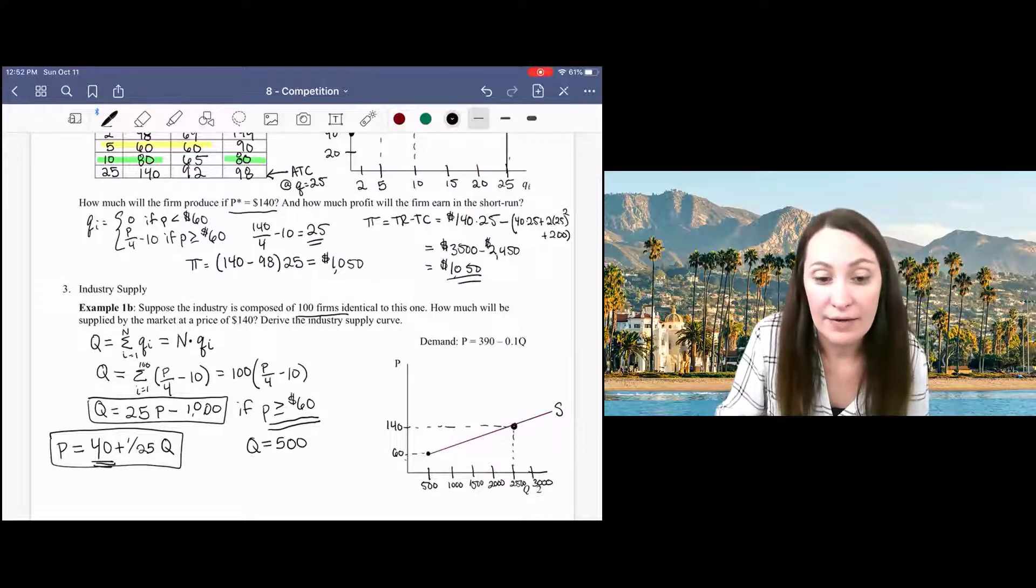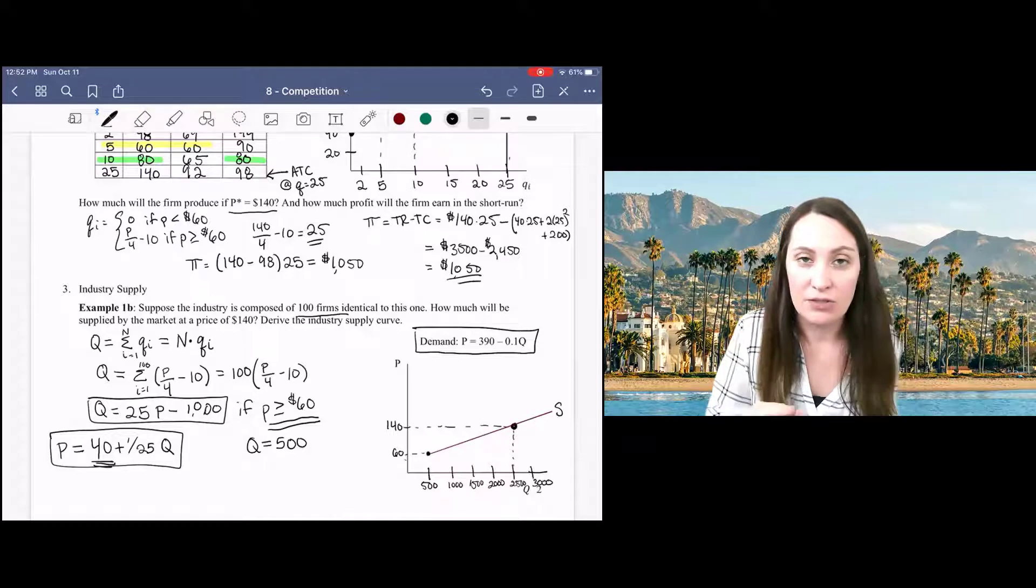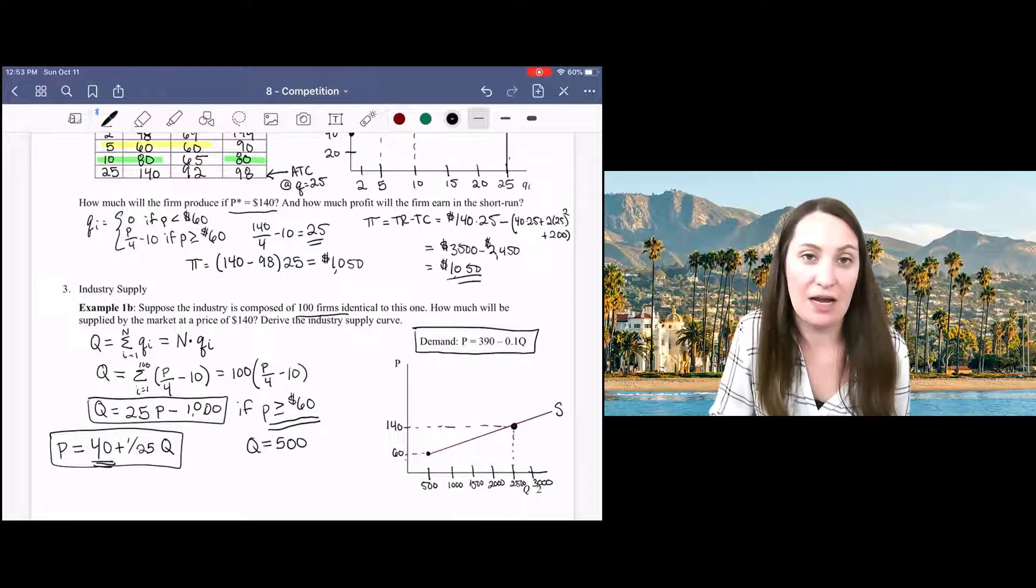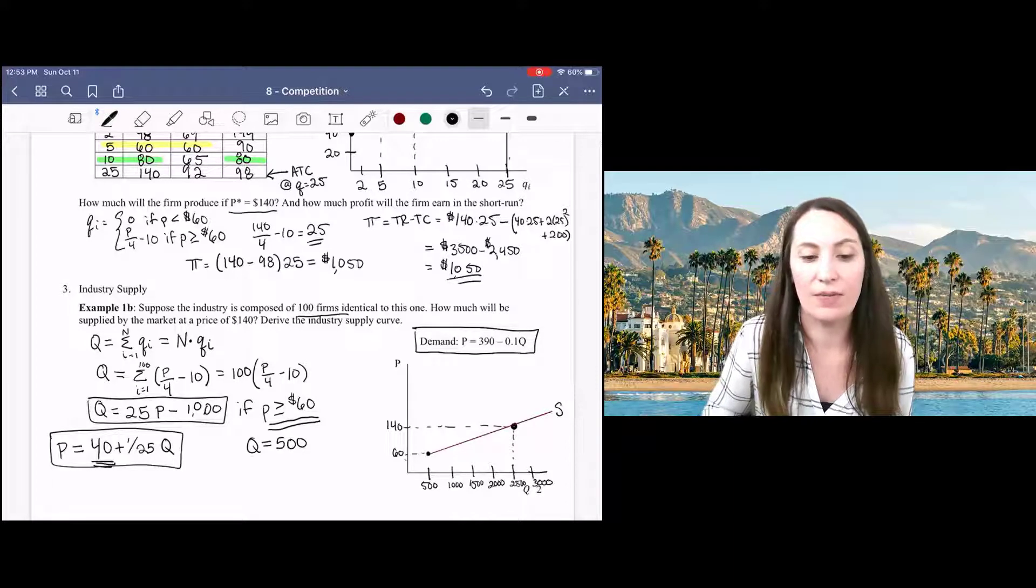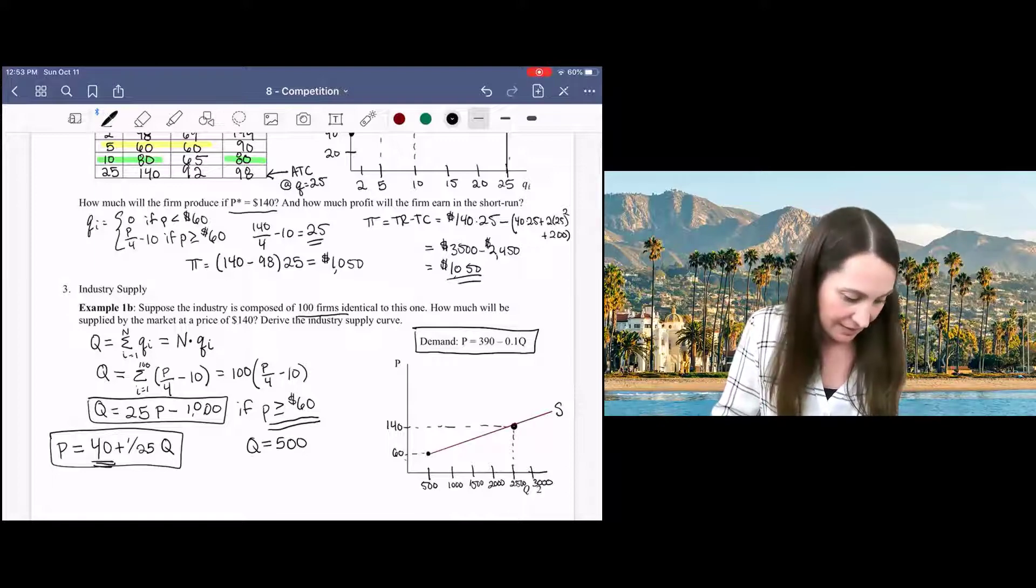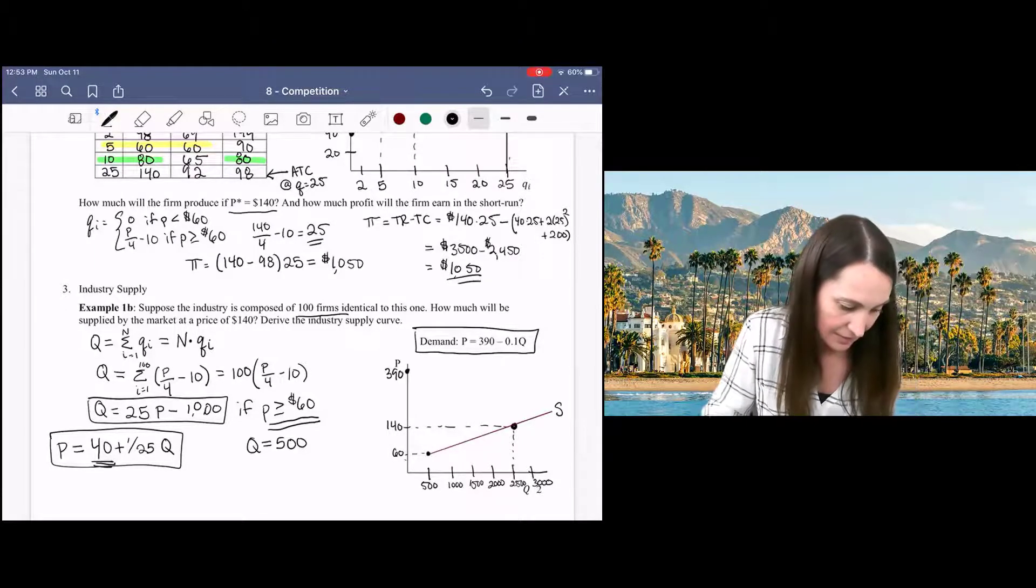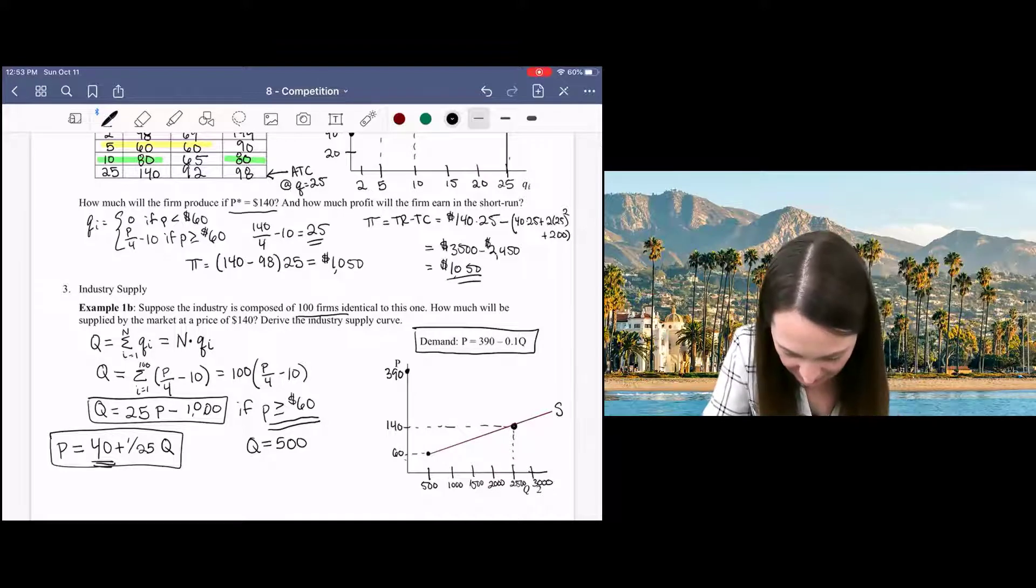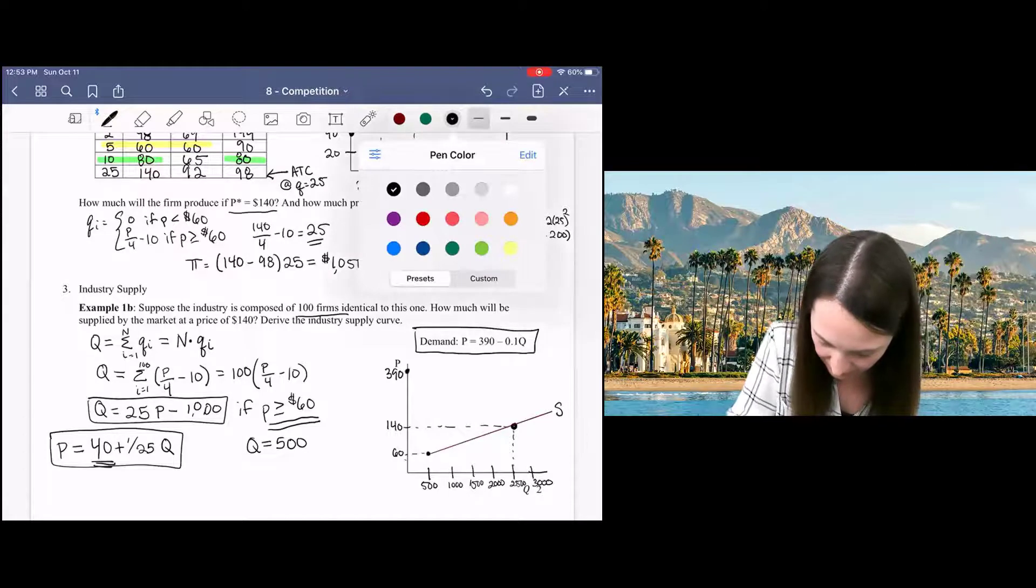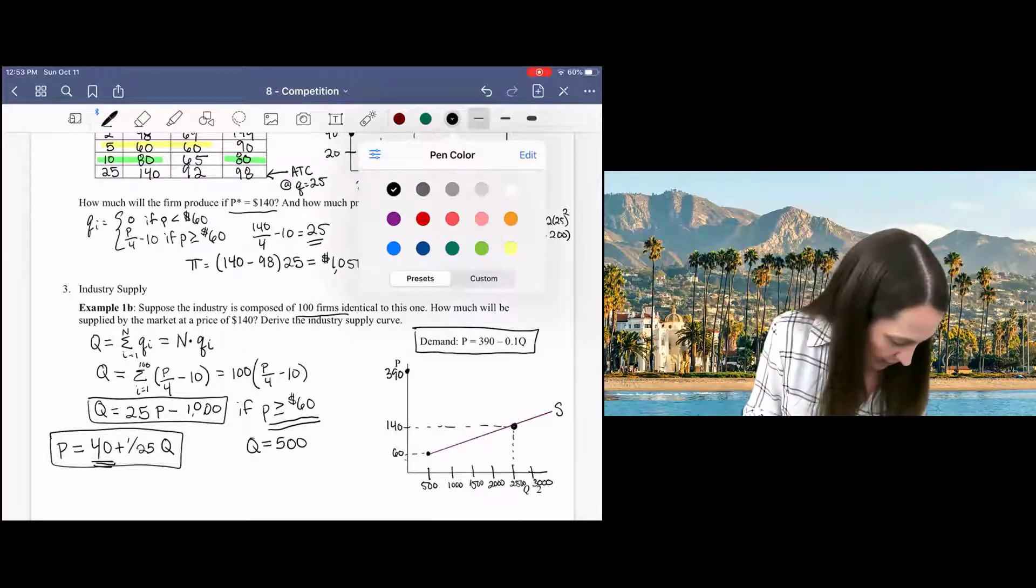Now for demand, I'm going to just assume some demand curve here. So this is given in the problem. I've assumed that this is our demand curve because we're going to use that going forward to talk about what happens in the long run. So here I've given us a demand curve where we have an intercept up here at 390. And then this is going to give me an equilibrium price and quantity that's the same as what we had in the previous parts of the problem.